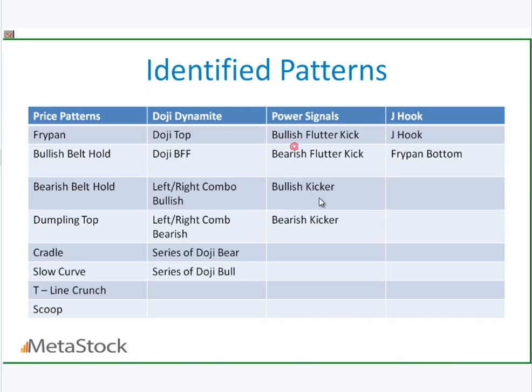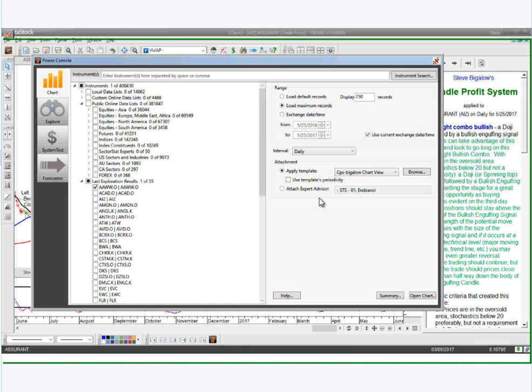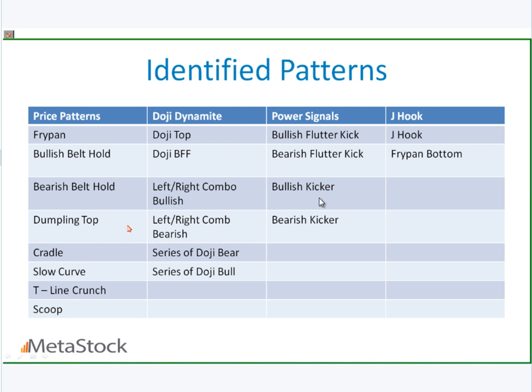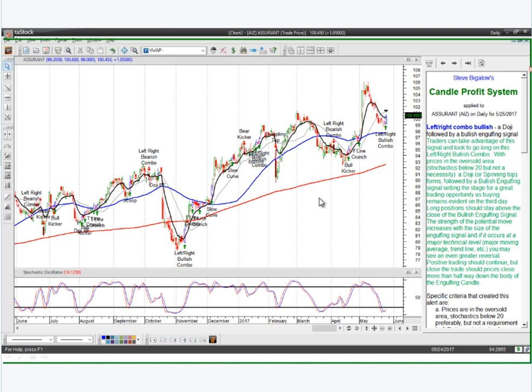There's a picture of the box — it's called Steve Bigelow's Candle Profit System. What we did is we figured out the patterns we recognize in the software. There are about 21 or 22 on this list — these are the ones we identify automatically in the charting. From here I'm going to jump into the MetaStock software program. I've got a chart of the Dow Industrial Average open and I'm going to walk you through exactly how these will show up on the chart today.